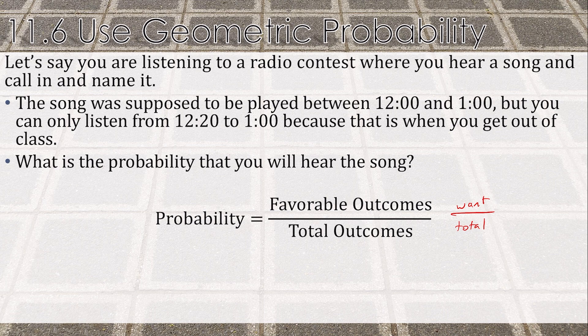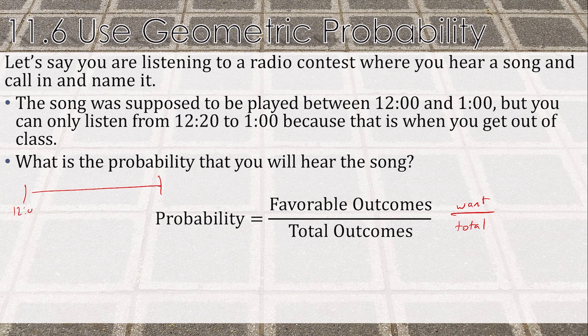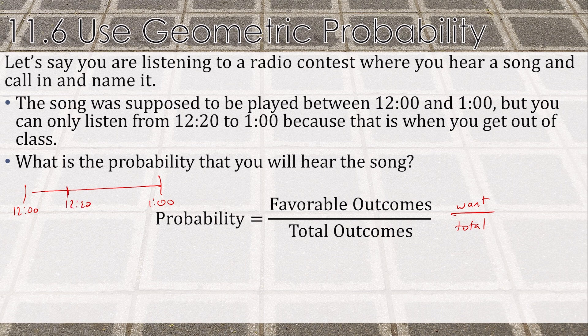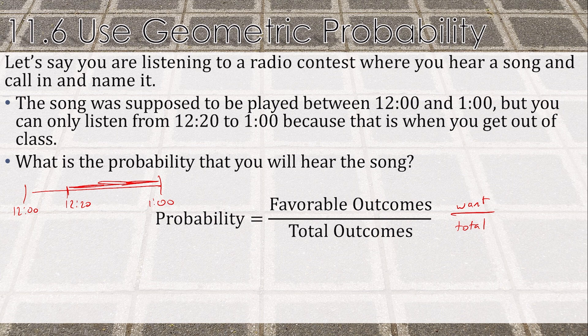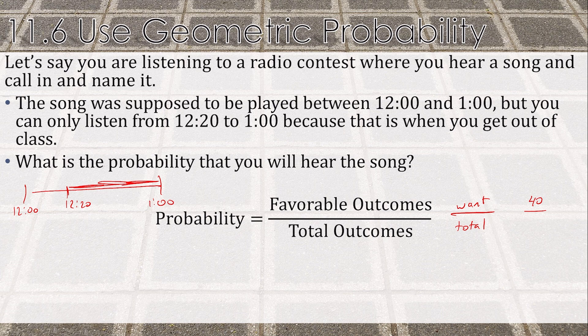Essentially what we have is a timeline here. If we go from 12:00 to 1:00, we can listen from 12:20. So this is the part we want. So what do we want? We want 40 minutes out of our total of 60 minutes, which would be two-thirds.